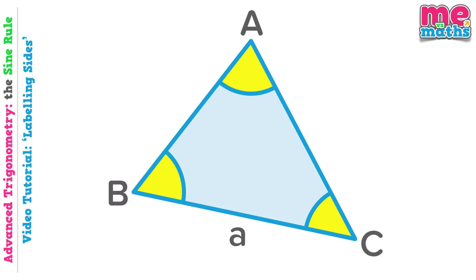So if the side opposite angle A is called side a, you probably won't be surprised to know the side opposite angle B is called side b. Again notice the lowercase letter is used. And finally side c will be located opposite angle C. So there we have a fully labelled non-right angled triangle ready for us to use with either the sine rule or the cosine rule.